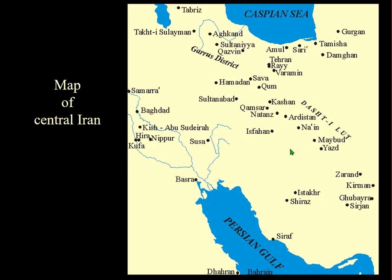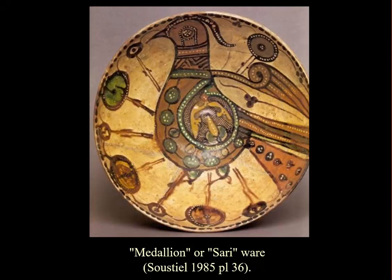Now I'll talk about some wares from the north: Damgan, Sari, Amul, Aghkhand, the Garrus district — which is an area rather than a town — and Georgian. All of these places have pottery associated with them, or I've sampled pottery from them like Damgan, so they're of importance.